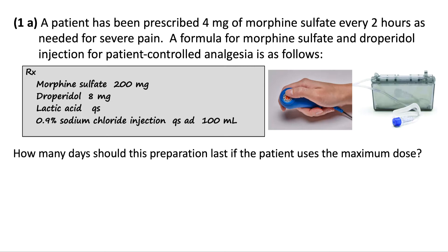Lactic acid is also included in a very small amount as an acidifier, because morphine sulfate is relatively basic. We want the final IV solution to be closer to neutral pH rather than too basic. Now, the first question: how many days should this preparation last if the patient uses the maximum dose — pushing the button every 2 hours around the clock?